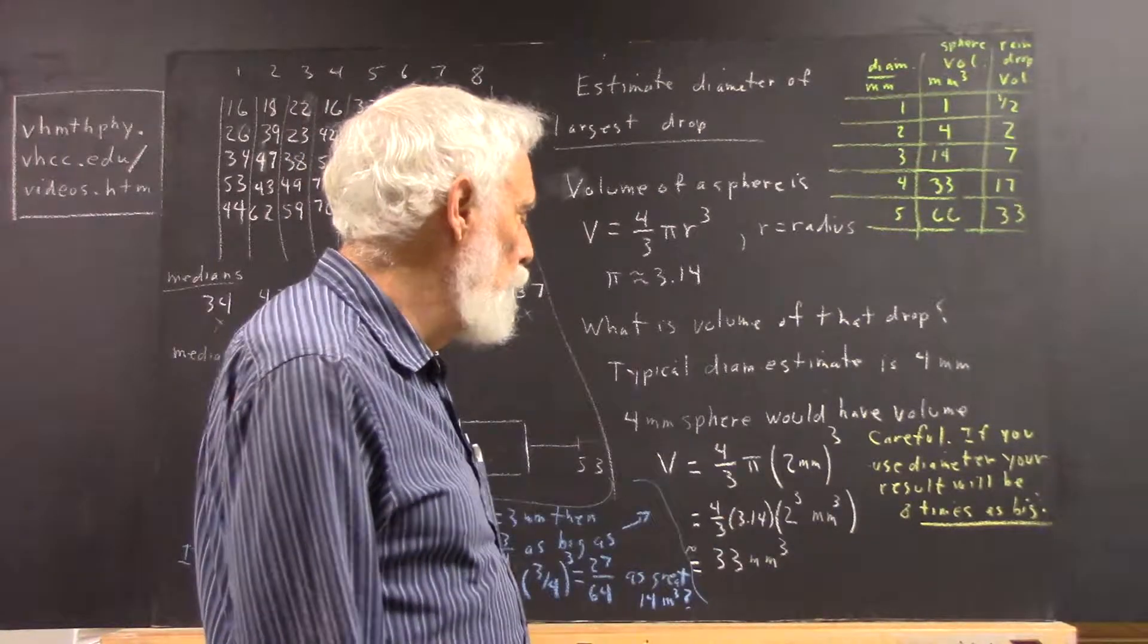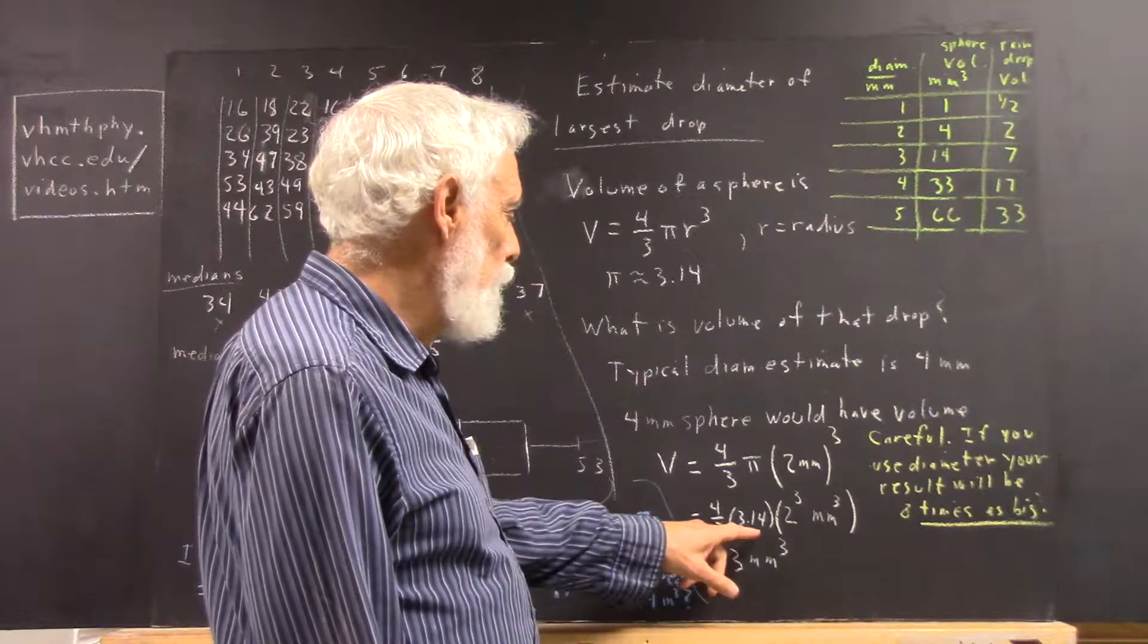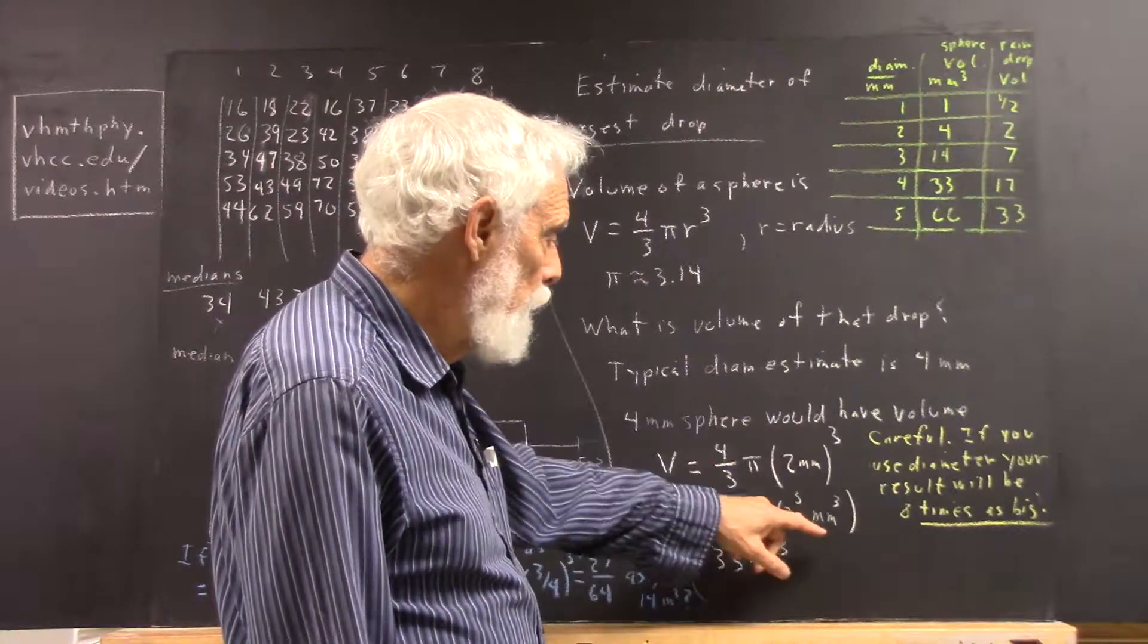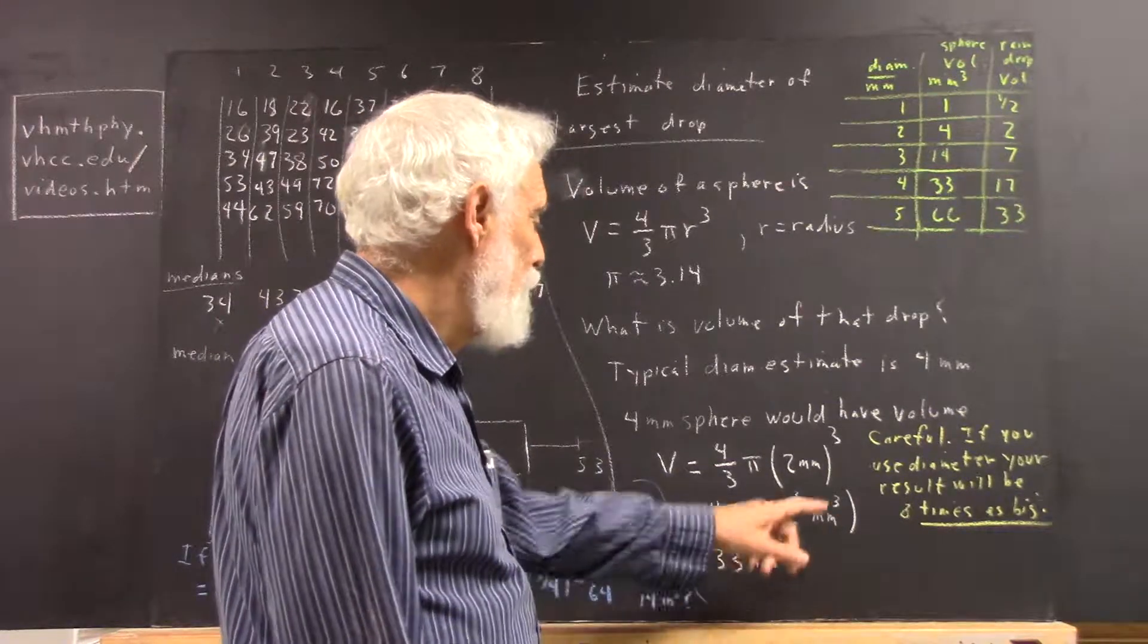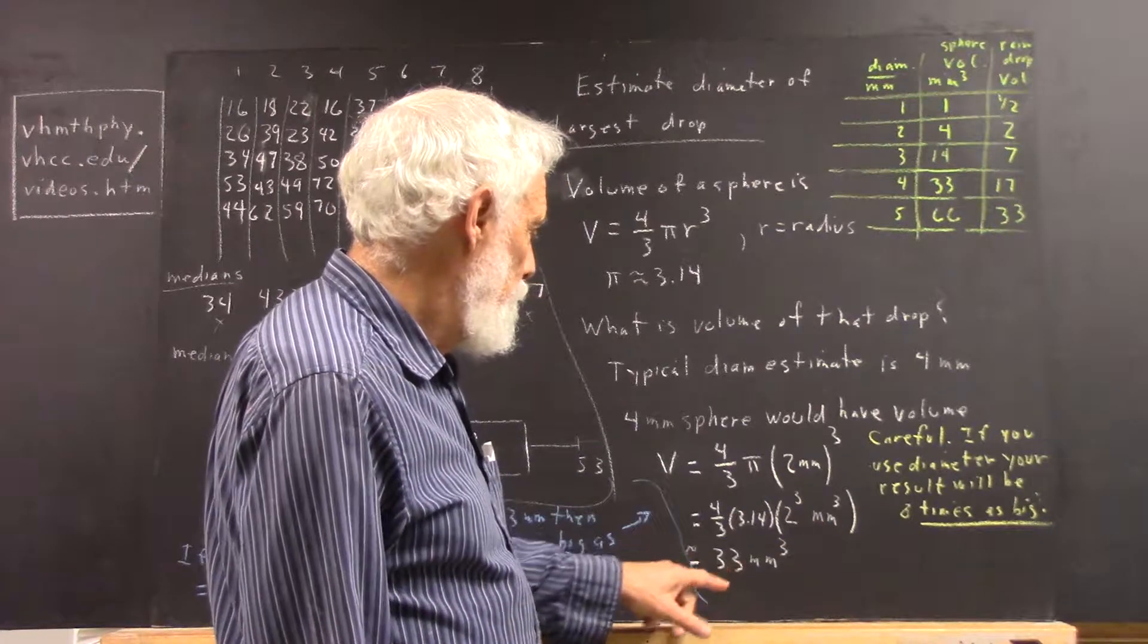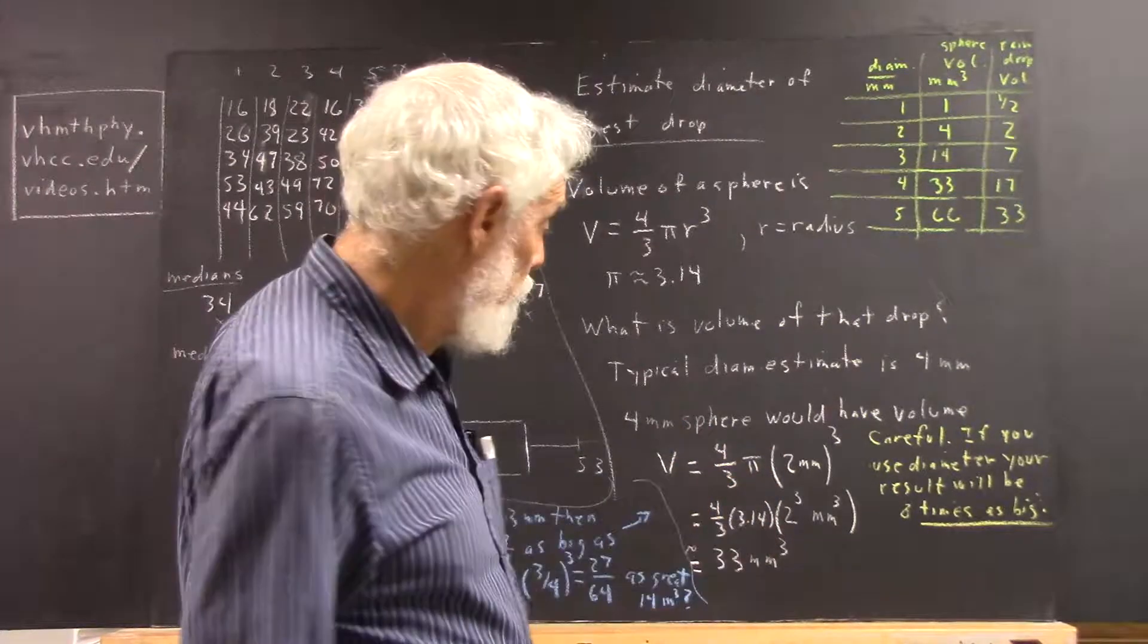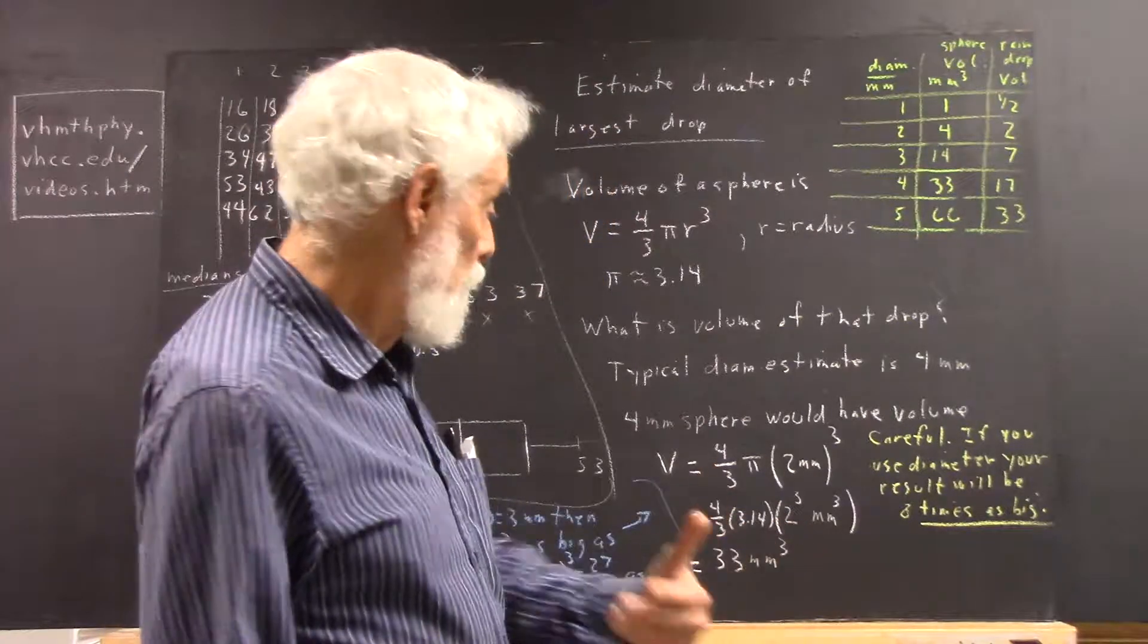If we do four-thirds pi times two millimeters cubed, well, that's close to four-thirds pi times 3.14, pi being about 3.14. And to cube the two millimeters, we cube the two and we cube the millimeters. Two cubed is eight, so we have eight millimeters cubed here. 3.14 divided by three, that's pretty close to three divided by three. That's pretty close to one. So we have four times eight millimeters cubed. That would be 32 millimeters cubed.